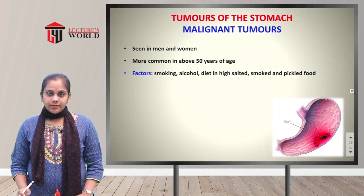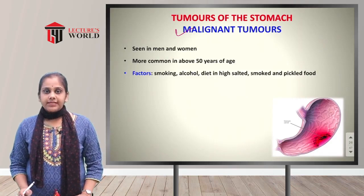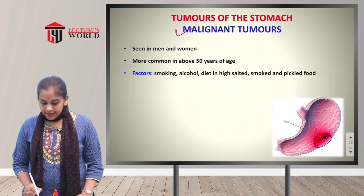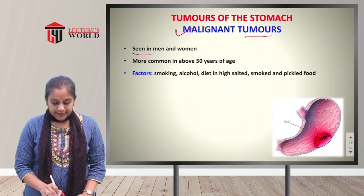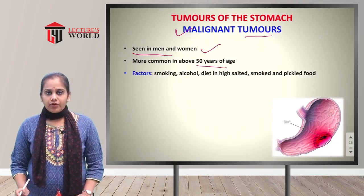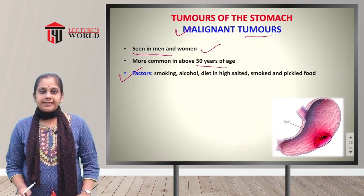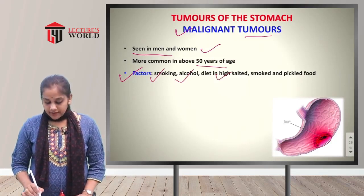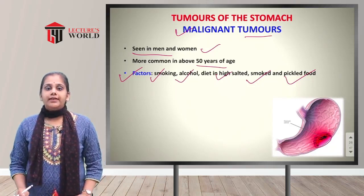Tumors of the stomach: malignant tumors are cancerous tumors found on the wall of the gastric mucosa or stomach mucosa. They are seen in both men and women, more commonly around 50 years of age. Causative factors include smoking, alcohol, high-salt diet, smoked diet, and pickled food — these are causative agents for the development of malignant tumors in the stomach.